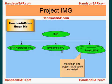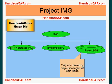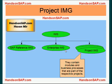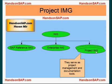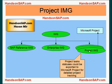Your Enterprise IMG would contain only those business processes that you need. Now, there would be multiple projects that could go on in an organization to implement the overall scope of SAP. So you can create more than one Project IMGs. They are created by the Project Managers or Team Leads, who can divide the work among themselves and create their own Project IMGs. They are subsets of Enterprise IMG and contain modules and business processes that are part of their respective projects. They also serve as Project Management and Documentation tools. You can export your Project Tasks to Microsoft Project for detailed Project Management.